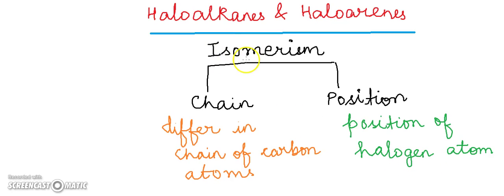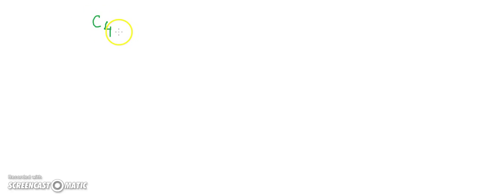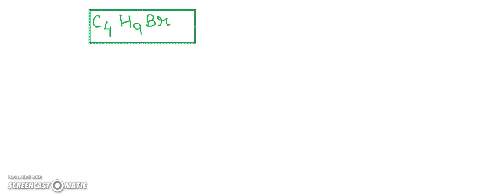In chain isomerism, there is a difference in the chain of carbon atoms — this means we can have the same number of carbon atoms. For example, in butane we have four carbon atoms. For the molecular formula C4H9Br, we have three isomers. Let us draw them.